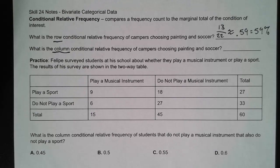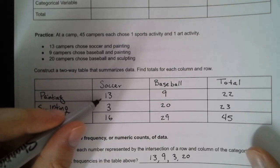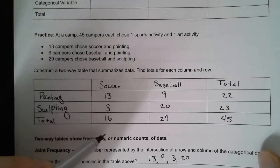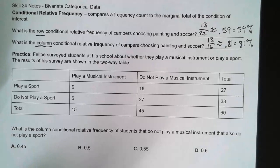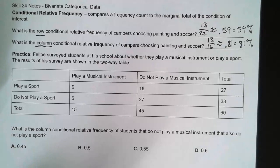For the column conditional relative frequency of campers that chose painting and soccer: again the value is 13, but this time we look at the total for the soccer column, which is 16. So 16 people chose soccer; out of those 16, 13 chose painting and soccer. That gives us 13 over 16, approximately 0.81 as a decimal, or 81%.